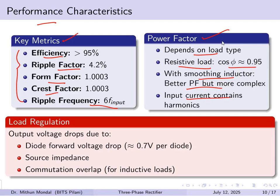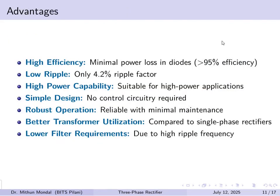For load regulation, the output voltage drop must be accounted for, including the diode forward voltage drop of approximately 0.7 V per diode, the source impedance, and commutation overlap when the load is inductive in nature.